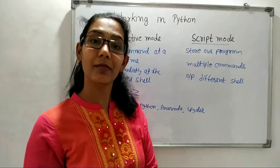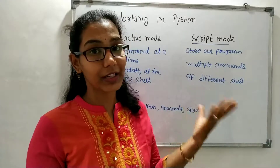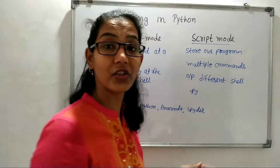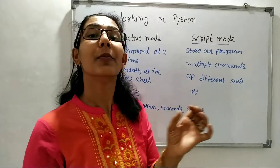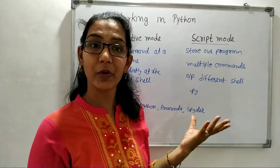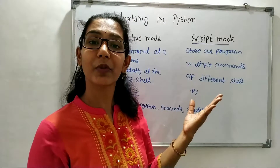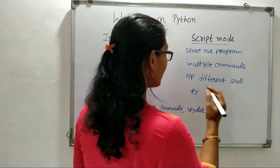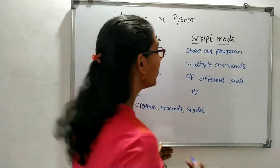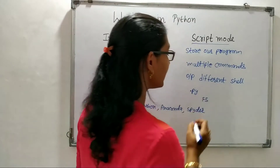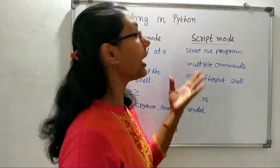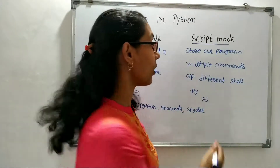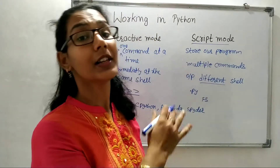Scripting mode saves our program on the disk, and for saving the program we use the dot-py extension after the program name. By this we can save our program, and after saving we can run or execute our program using the Run Module option or by using the shortcut key F5. The output is then produced on a different screen rather than the same screen.